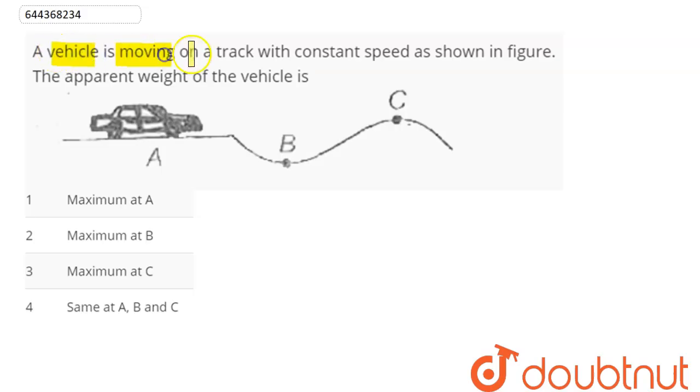Question is: a vehicle is moving on a track with constant speed as shown in the figure. The apparent weight of the vehicle is?